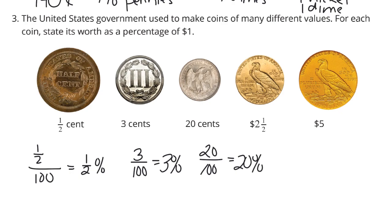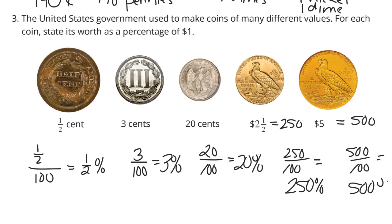Two and a half dollars. Notice it says dollars. Well, two and a half dollars is worth 250 cents. So this would be 250 over the 100 to get 250%. And five dollars is worth 500 cents. And so 500 over the 100 cents in a dollar is 500%.